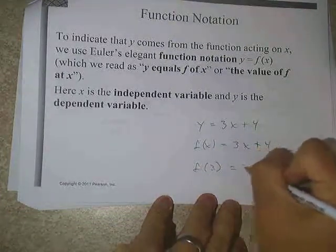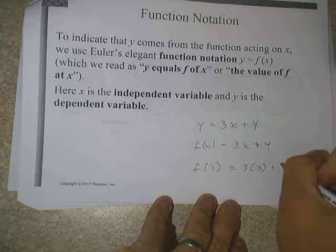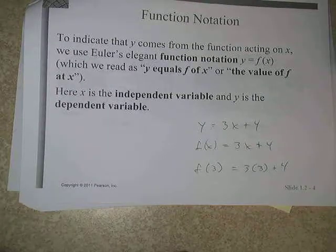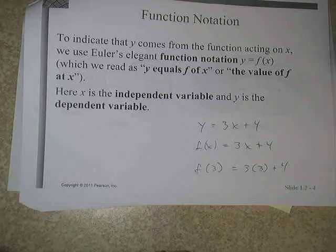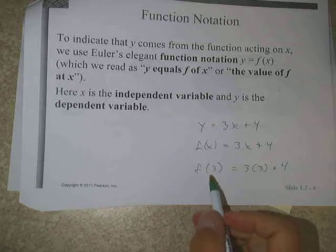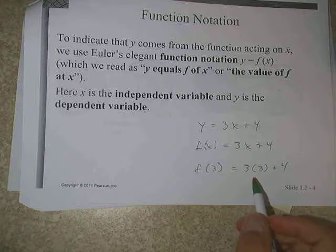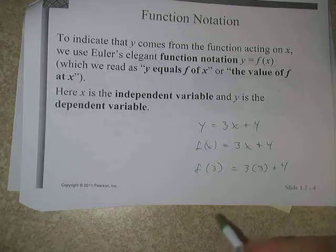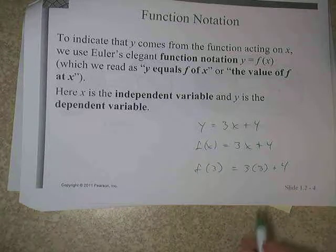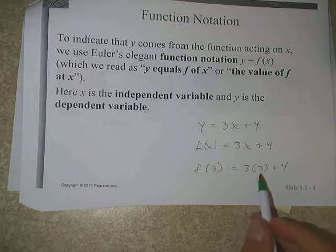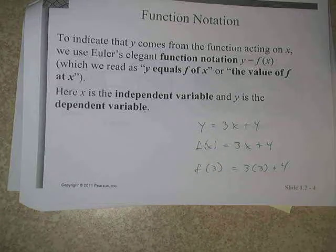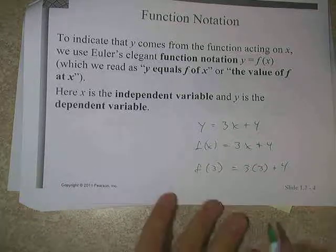If I wanted to know what f of 3 is, I just put a 3 into the equation. In this particular case, I'd get 3 times 3 plus 4, which would be 13. All I'm doing when I'm putting a number into the function is finding a point that's on the graph of this equation. The point (3, 13) would be on that line.